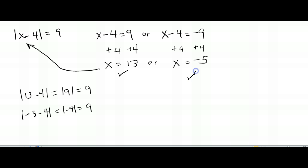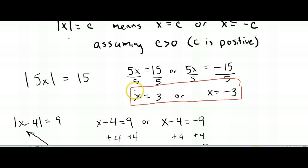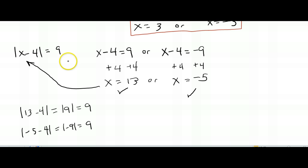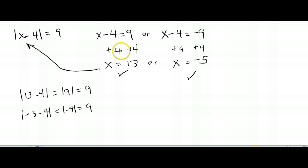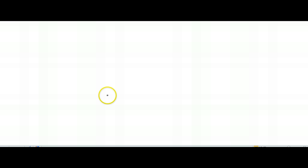So these are both the same type of problem. We took away the absolute value bars, had one equation equal to the regular number and the other equal to the opposite of that number, then solved whatever those two equations were one at a time. That's how we do an absolute value equation when it's something similar to a linear expression inside. But it doesn't have to be linear inside the absolute value bars — it can be something quadratic.